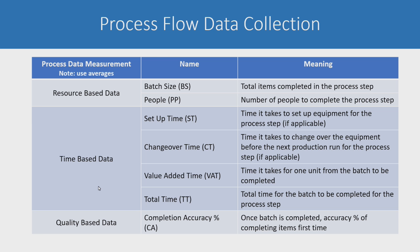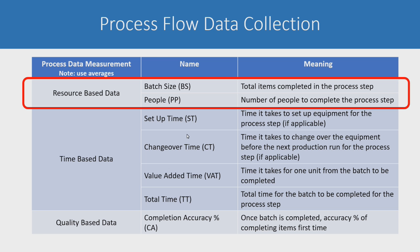The value stream map I'm creating is a non-traditional one — it's a service setting, not manufacturing. There are just people in an office at desks doing the work, except when it goes to the printer. Some data fields like setup time and changeover time apply more to manufacturing. The cool thing is you decide what data you need. For resource-based data, we look at batch size — total items completed in the process step — and the number of people required to complete that step.